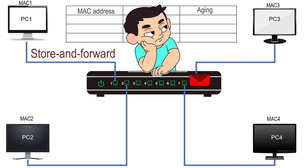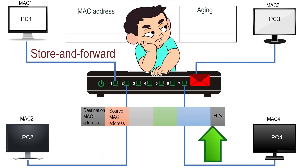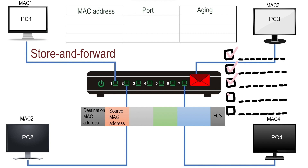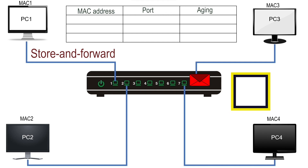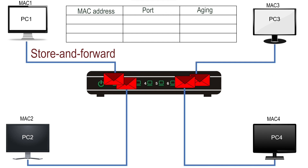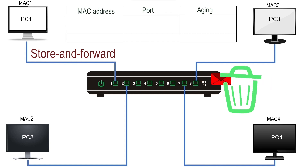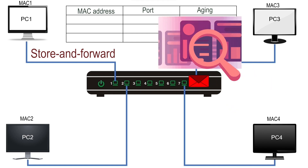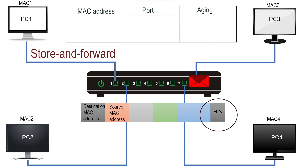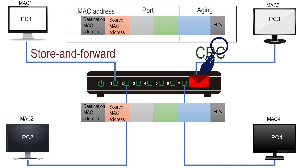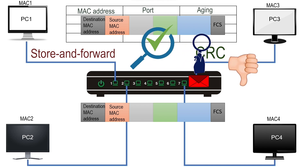In the store-and-forward method, the switch waits until all fields of the frame are received. After receiving all fields, the switch verifies whether the received frame is error-free. If the frame is error-free, the switch forwards it from the selected port or ports. If it contains errors, the switch discards the frame. To know the condition of a frame, the switch uses the FCS field, which contains a value known as the CRC value. The CRC value allows a receiving device to know whether the frame is exactly as the source packed it or has been damaged or tampered in transit.